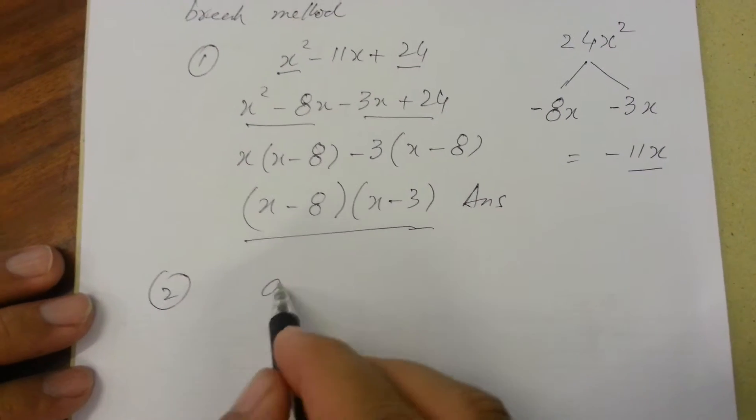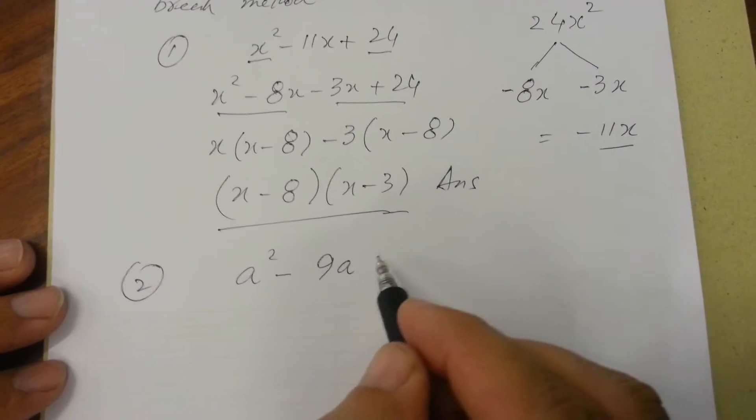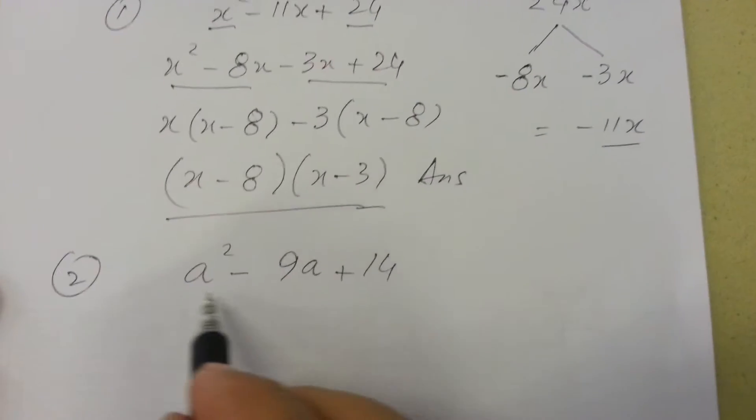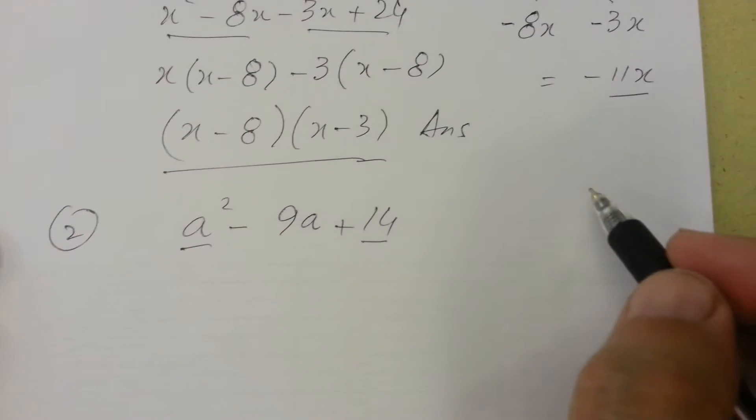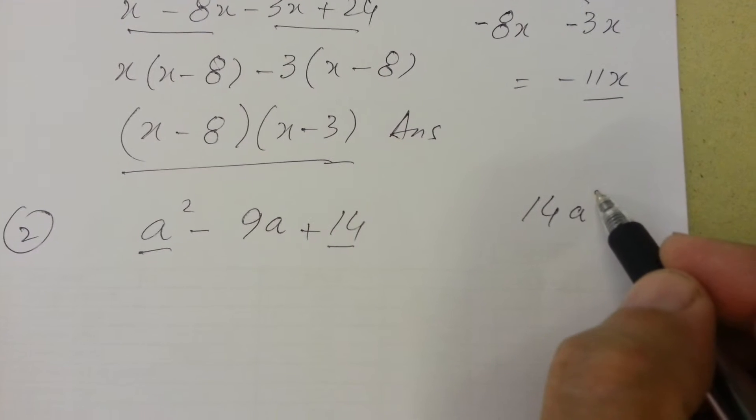Question 2: a squared minus 9a plus 14. Now multiplying first term with the last one, it will be 14a squared.